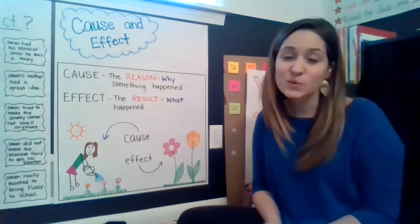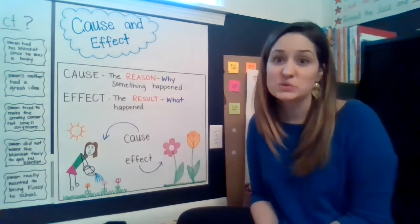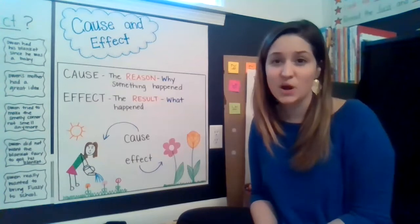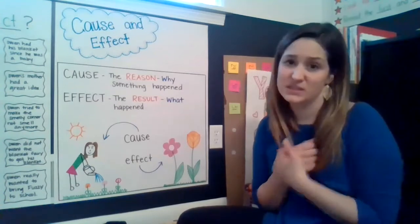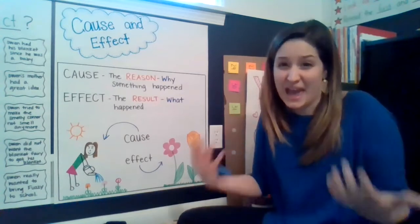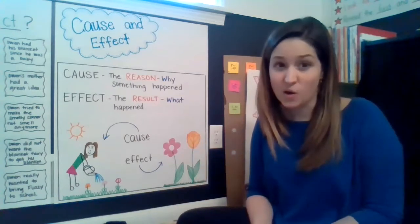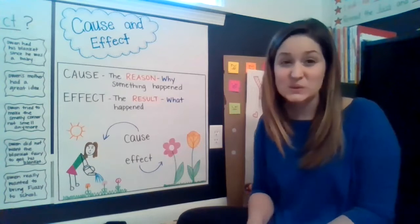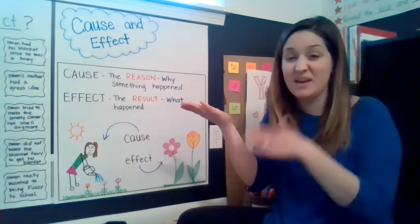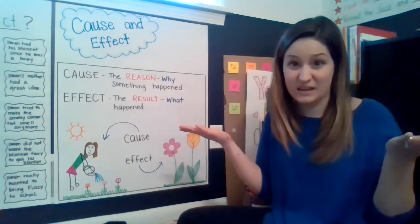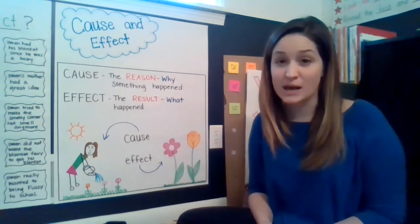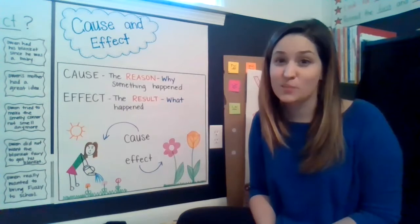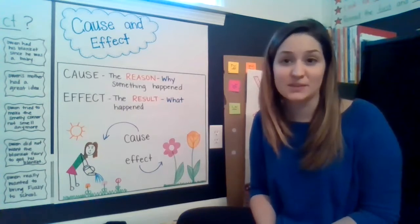So friends, we're going to talk about this a little bit more today with our story, Owen. The one thing I remembered in Owen is that Owen loved, loved, loved his blanket fuzzy. That's an effect. The reason why Owen loved his blankie so much is because he had it since he was a baby, so it's so important to him. So the cause is Owen had his blanket since he was a baby. The effect is he really, really loved it. There are lots of causes and effects in the story of Owen, so we're going to read it again today and try to talk about the causes and effects that happen in the story.